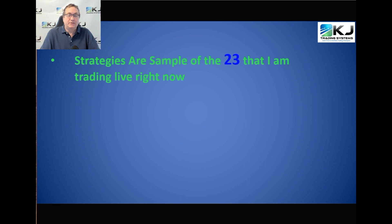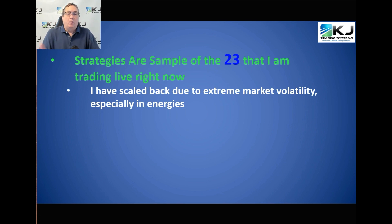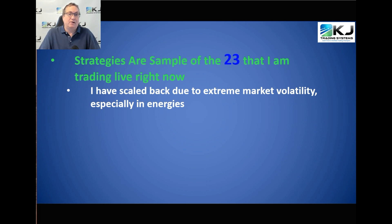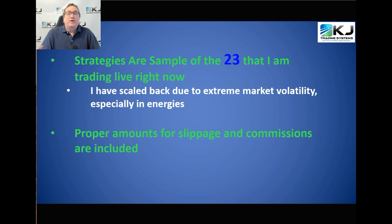The strategies I'm going to show are from 23 that I'm currently trading. Compared to last month's video, I've scaled back a little bit, especially in energies, partly because of the ongoing Ukraine-Russia conflict. There's a lot of market volatility in energies, stocks, metals, and even eggs, so I've scaled back to take a little less risk during this high-volatility period. All equity curves shown include slippage and commissions.